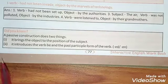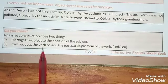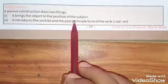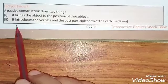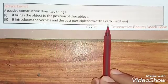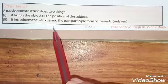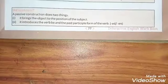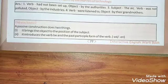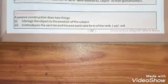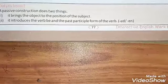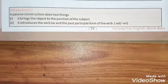Now you have come to know that a passive construction does two things: it brings the object to the position of the subject, and it introduces the verb 'to be' and the past participle form of the verb. You have to use the past participle in passive voice, whatever form of verb has been used. The rest of the things related to this important chapter will be taught to you in the next video. Thank you.